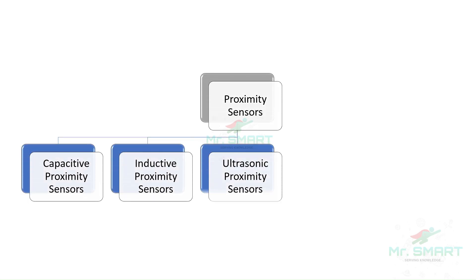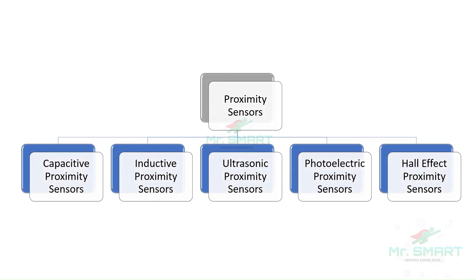In industries, a wide variety of proximity sensors are used. Some of the common types used in industries are capacitive proximity sensors, inductive proximity sensors, ultrasonic proximity sensors, photoelectric proximity sensors, and hall effect proximity sensors.